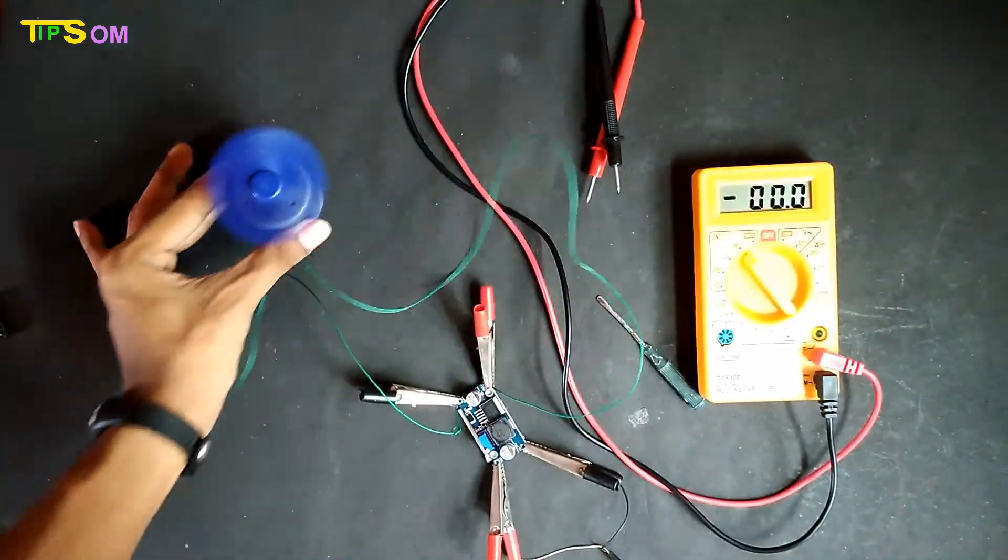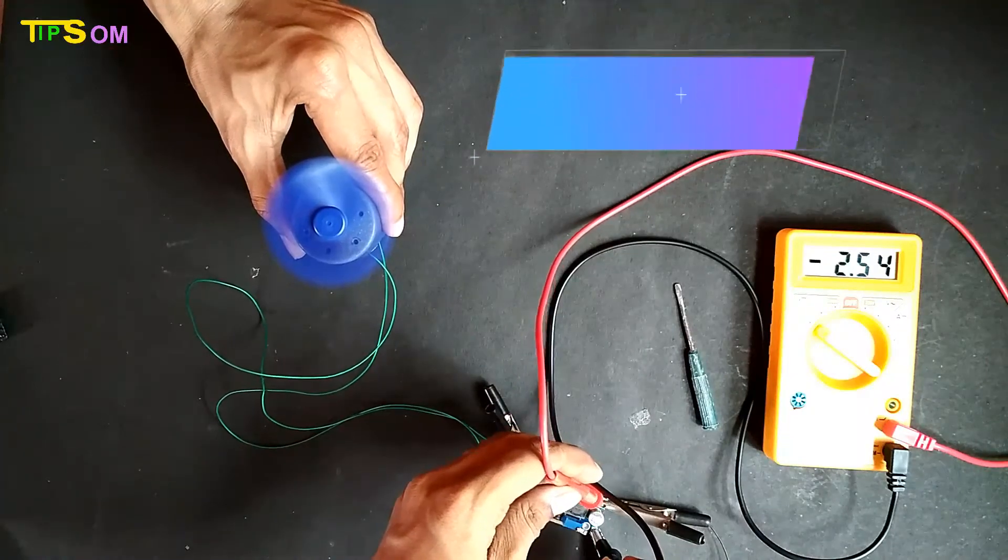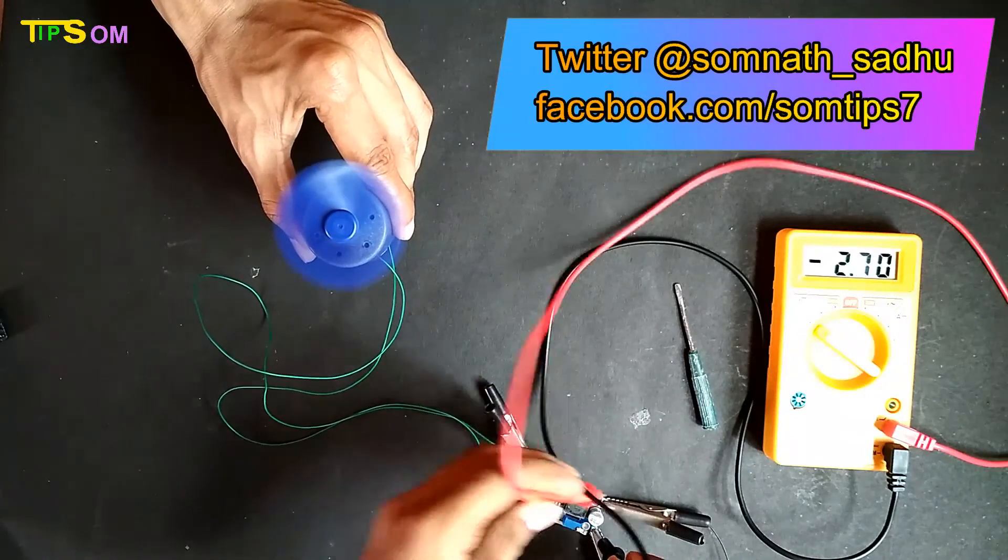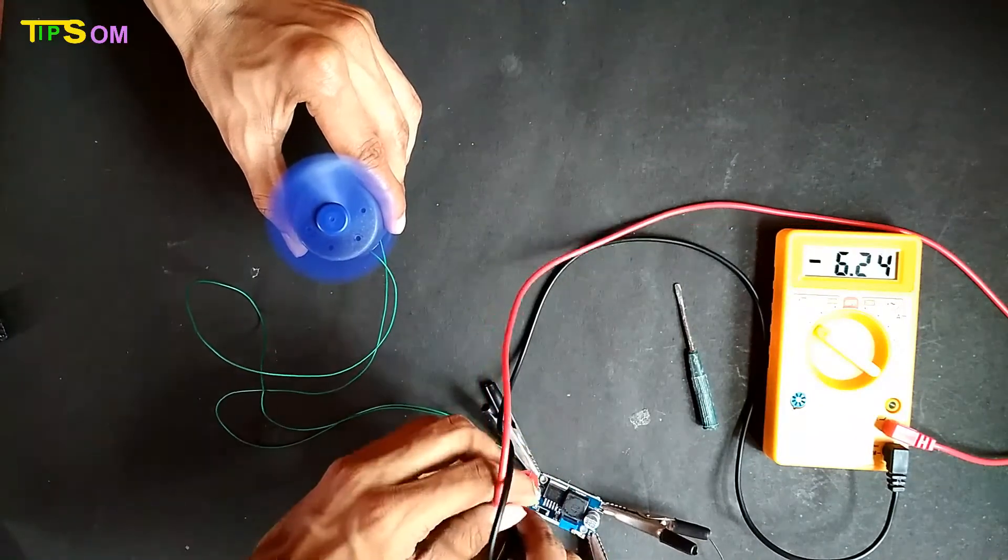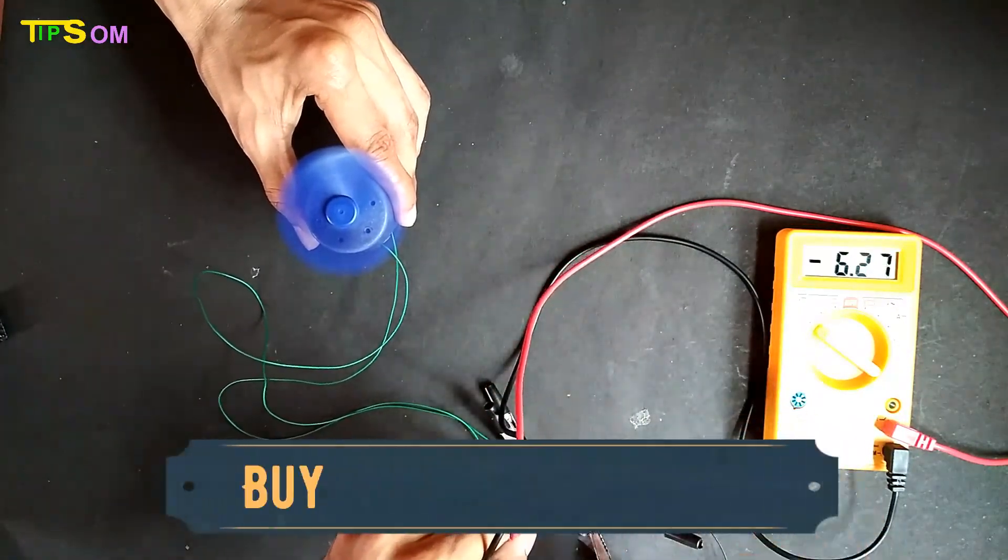But let's check what the output voltage is with load. Without load it was 12 volts, but now you can see with load it is 6 volts. So the voltage will decrease at the output side with load.